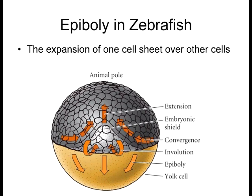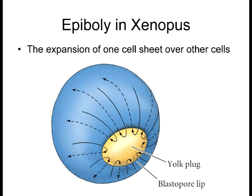Epiboly is when cells expand and essentially cover other cells or the yolk itself. After initial cleavage, cells undergo epiboly, expanding to completely surround and envelop another group of cells. In Xenopus, not only do cells involute and come underneath, but the outer layer of cells coats and completely surrounds, moving until it seals off the yolk plug — a tiny area that eventually closes up.